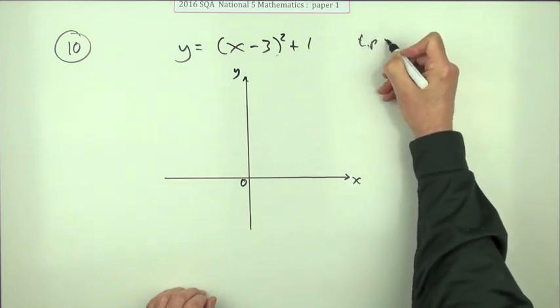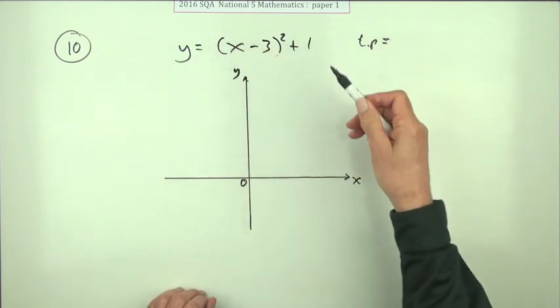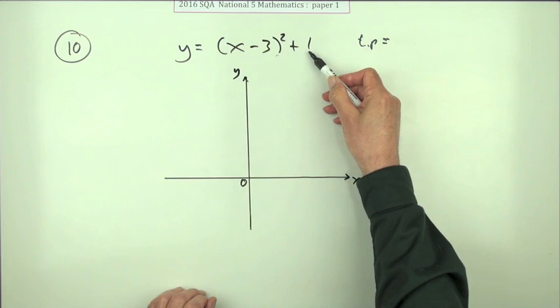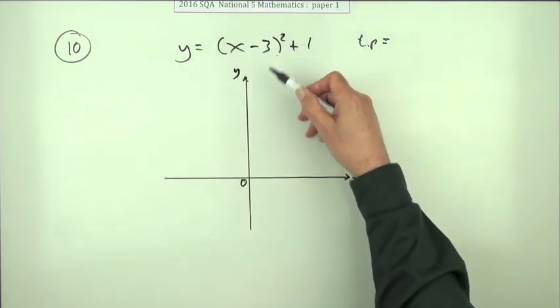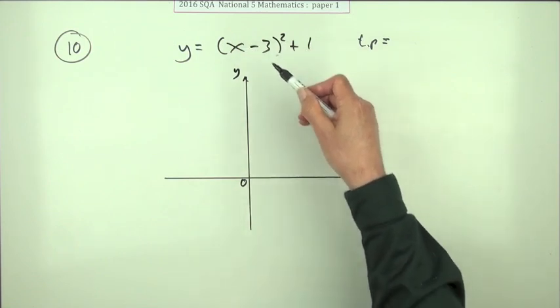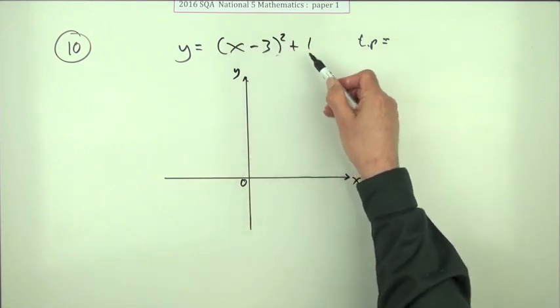The turning point would be where it reaches, and you know it's positive so it's the correct way around. Its lowest value would be 1 when the bracket comes to zero, because this is a square - anything else you put in there, positive or negative, will produce a positive number when you square it, which can only add to it.